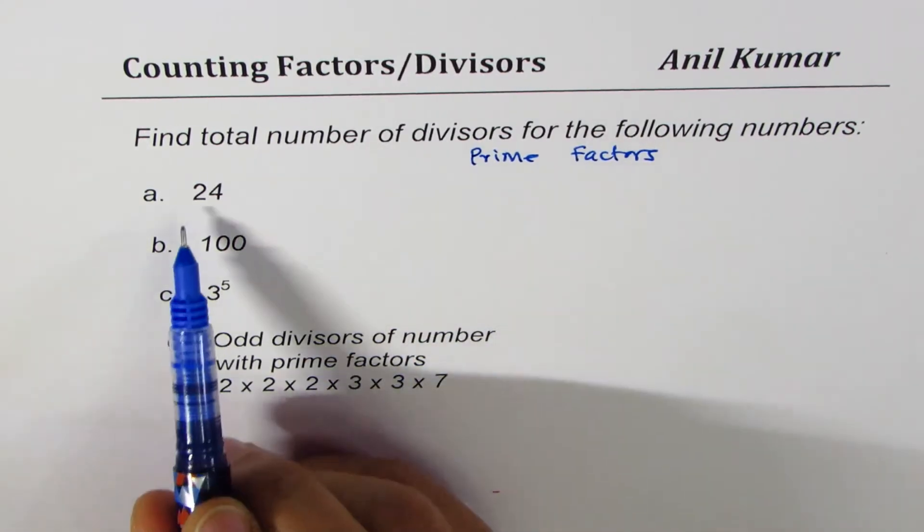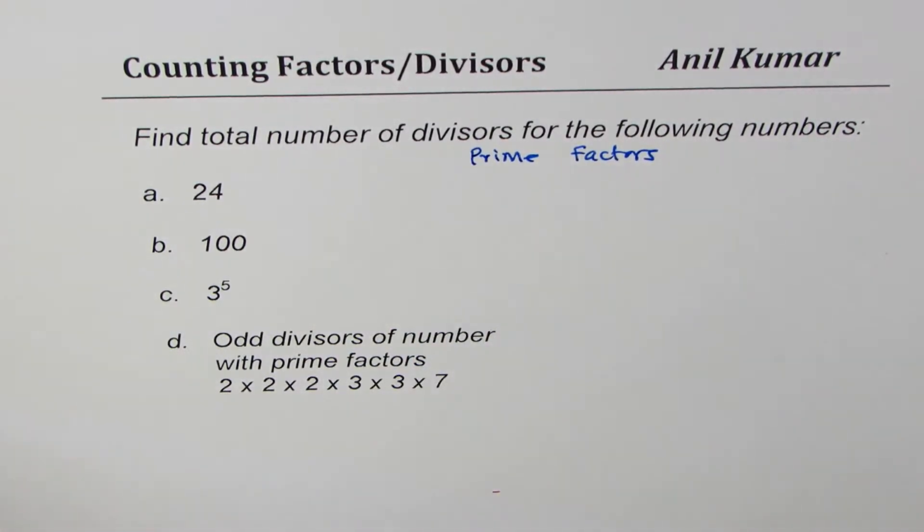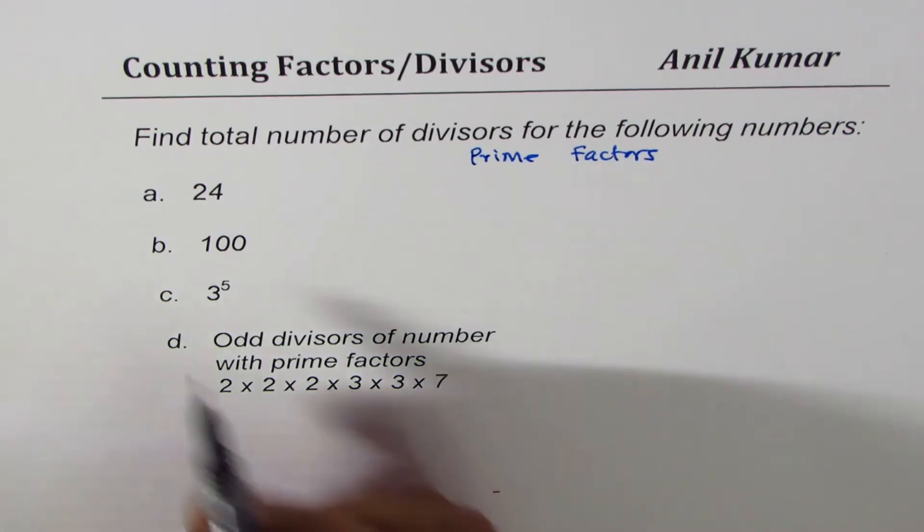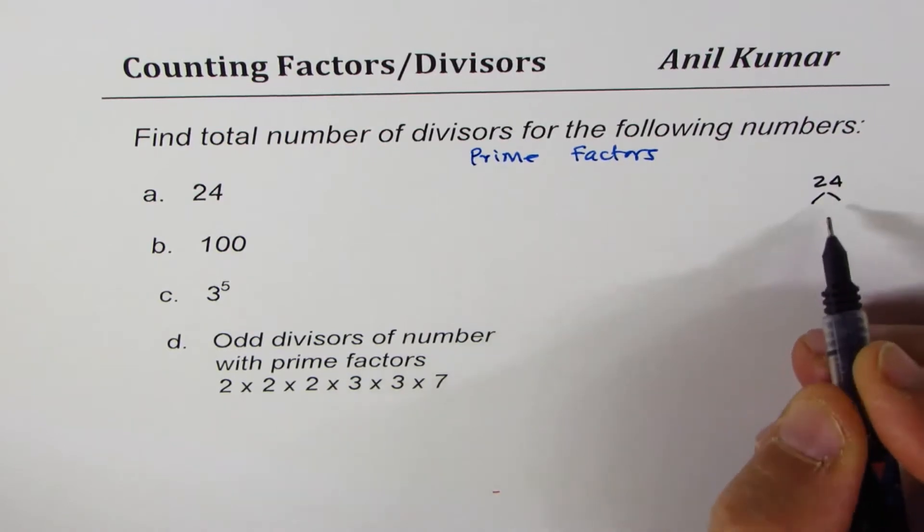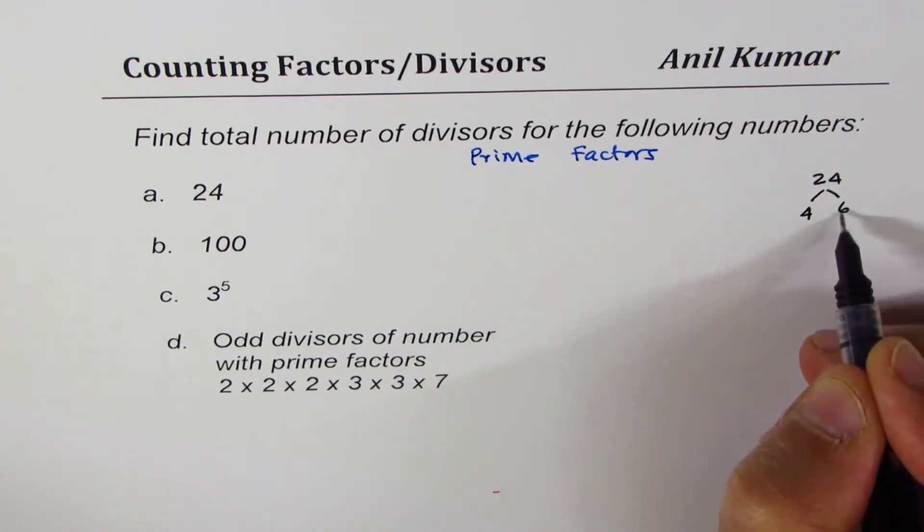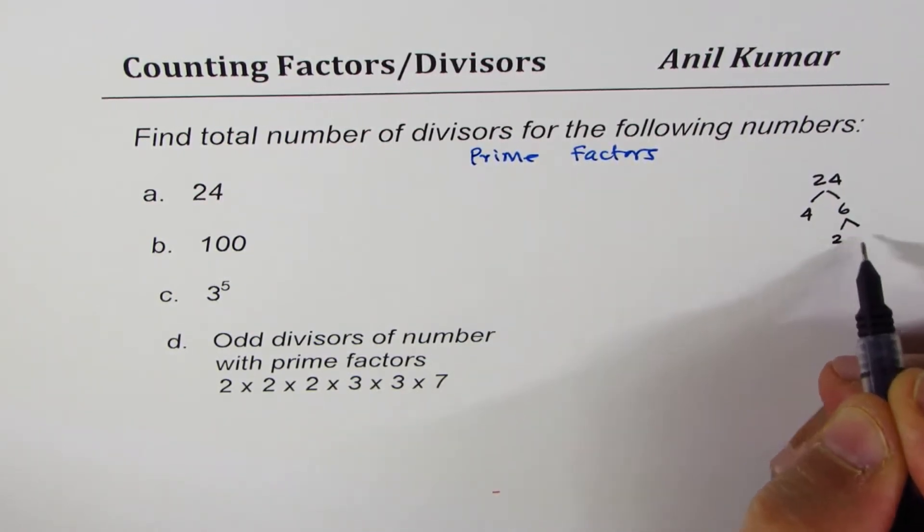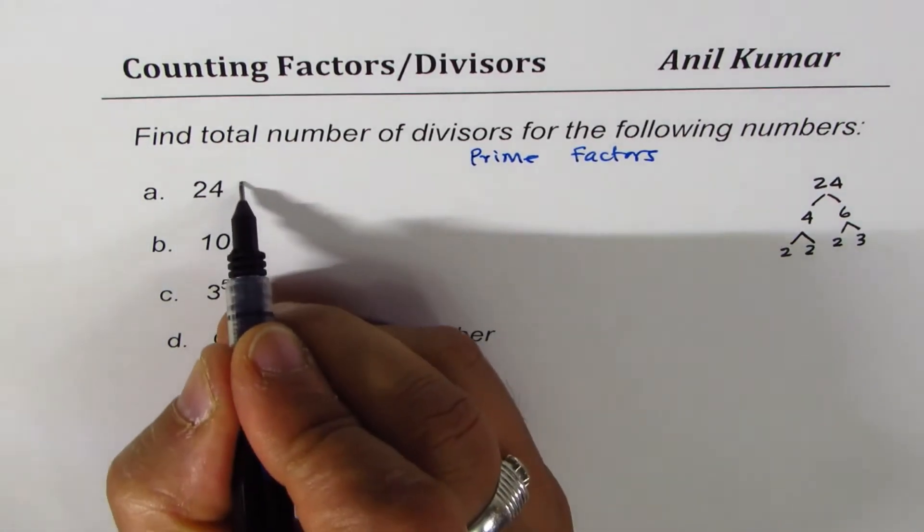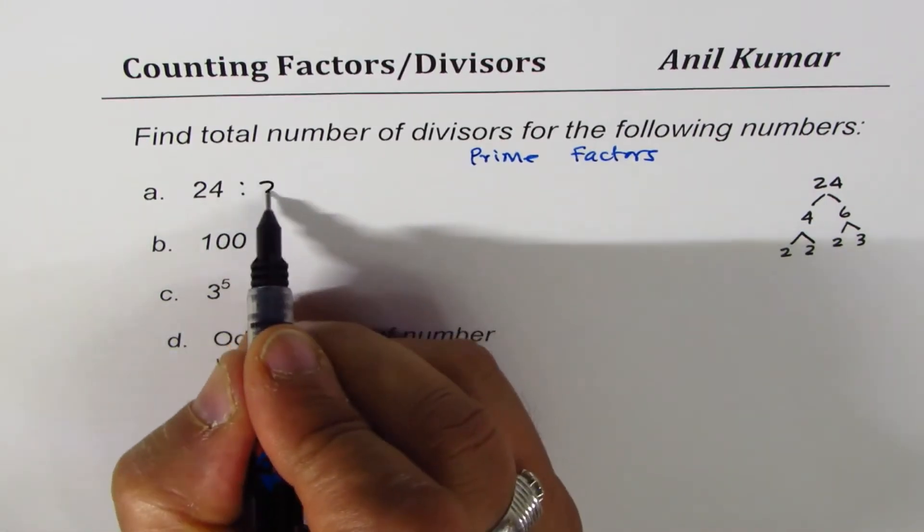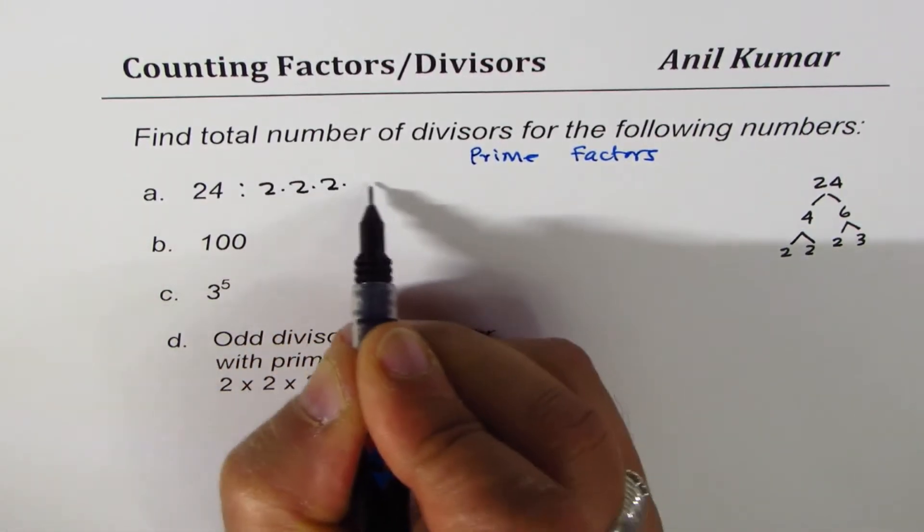24, so let's do prime factorization of the number 24. 24 is 4 times 6, right? 6 could be written as 2 times 3 and 4 as 2 times 2, so clearly 24 could be written as 2 times 2 times 2 times 3.